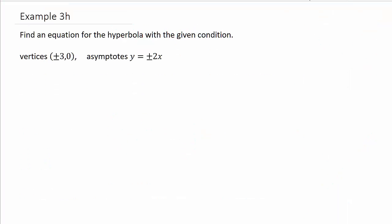Alright, we've got another example here for finding the equation of a hyperbola. This time, they tell us the vertices are plus or minus 3, 0. And they give us the equation of the asymptotes, Y equals plus or minus 2X.